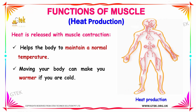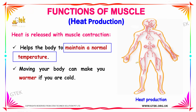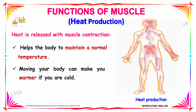How do muscles help in heat production in the human body? Heat is released with muscle contraction, and it helps to maintain a normal temperature in the human body. If you move your body, your muscles will help make your body warm when you are cold. That is how the muscle can produce heat to keep your body warm.